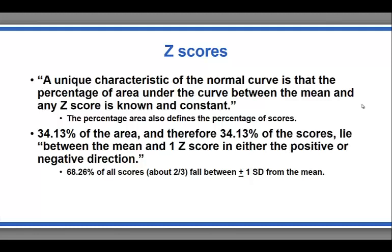In addition, the percentage area also tells us the percentage of scores that are associated with that section of a normal distribution. For example, 34.13% of the area and therefore 34.13% of the scores lie between the mean and plus one standard deviation, and the mean and minus one standard deviation.